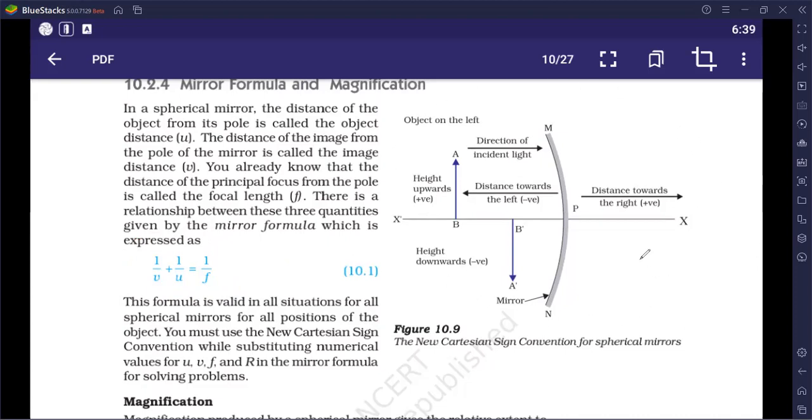You will make a rough ray diagram. Whenever you are moving towards left, it is negative. We generally keep the object here on the left-hand side of the mirror. So, U will always be negative. If the image is made on the same side, then V will also be negative. There are very rare cases where the image is made on the right-hand side. In that case, V will be positive. Convex mirror's focal length will always be positive. And the concave mirror's focal length will always be negative.